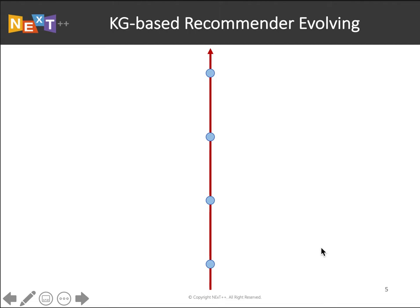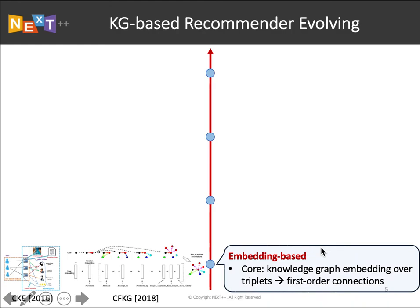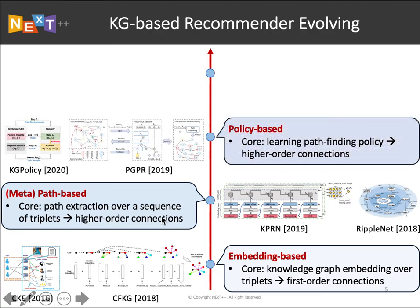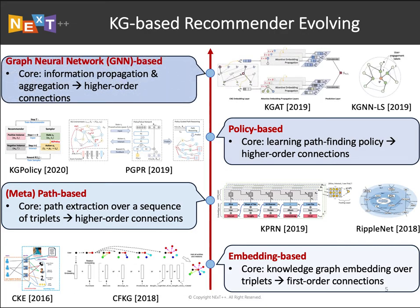I would like to introduce how KG-based recommender models have evolved. Earlier work like CKE and CFKG extract Knowledge Graph embeddings over triplets as the representational features of items. Instead of first-order connections, another line extracts paths of sequences of triplets to explore potential items of interest. Some follow-ups design reinforcement learning agents to automatically discover potential items. Another popular line applies graph neural networks over knowledge graphs for information propagation and aggregation, to enrich user and item representations. In this work, we focus on the GNN-based research line.